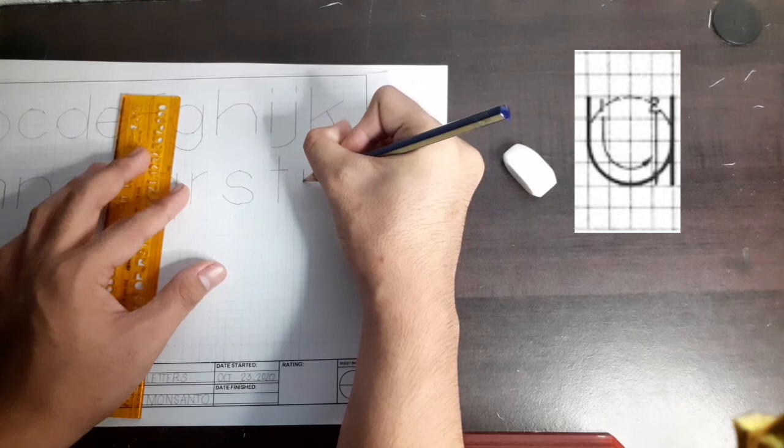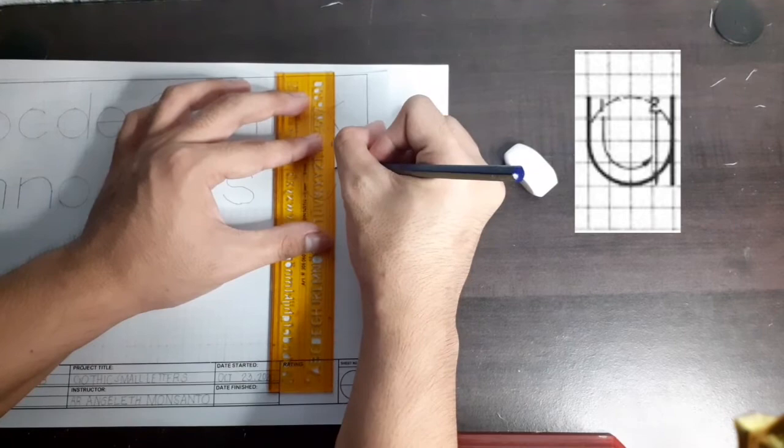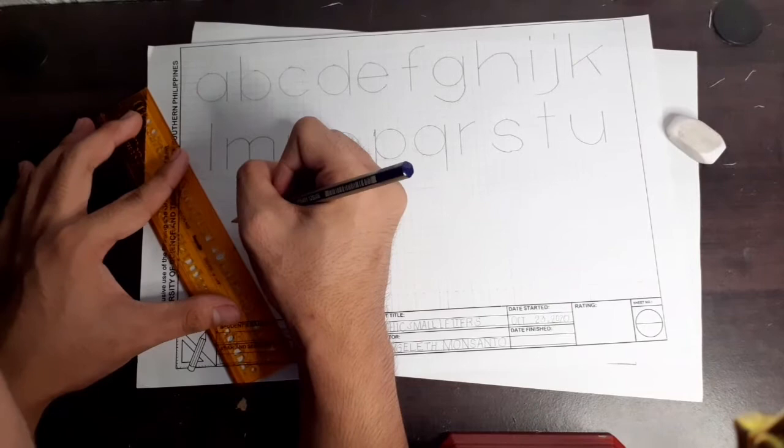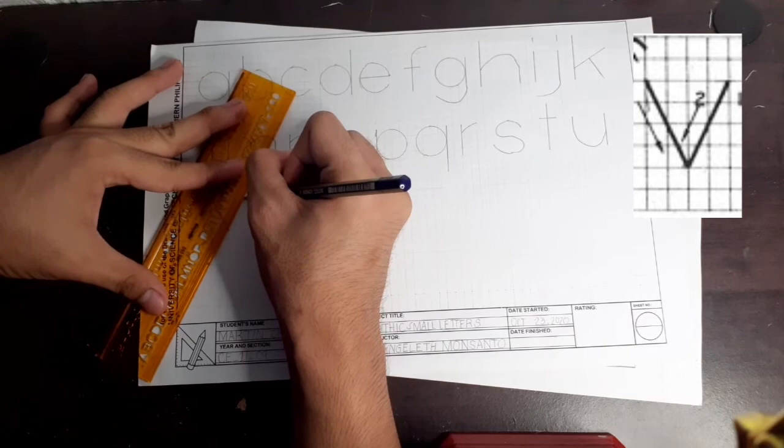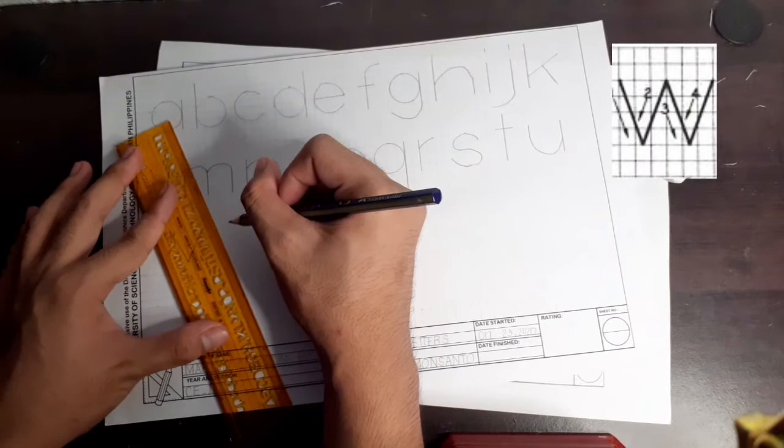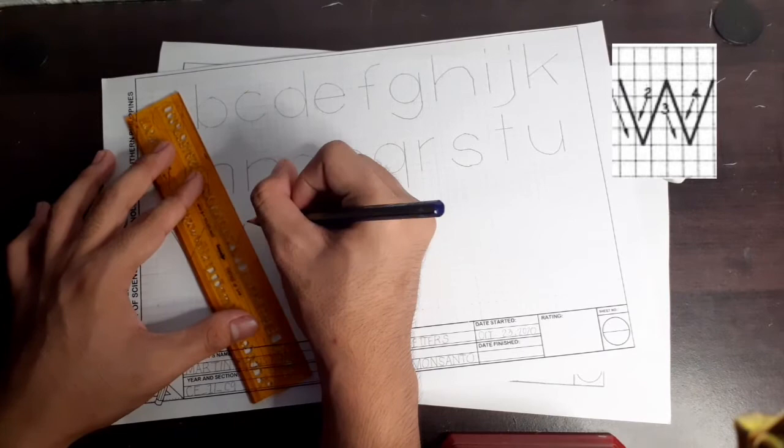Letter U is just complete alternate of letter N. It occupies five spaces just as shown in the picture. Letter V is two opposite slanting lines that meet in the center. W is written in two letter Vs, but it occupies seven spaces in total.